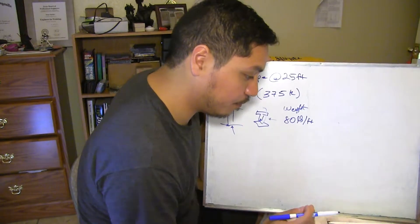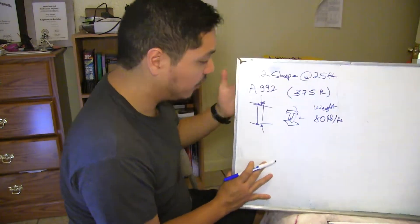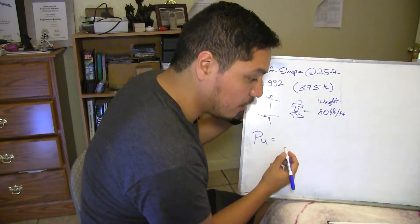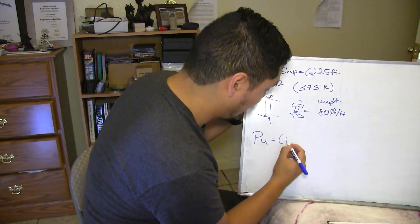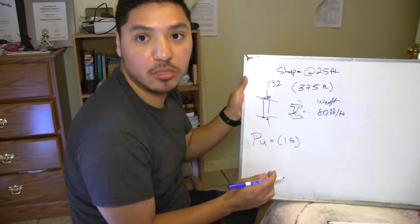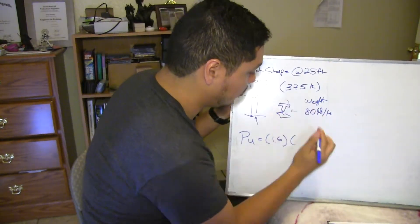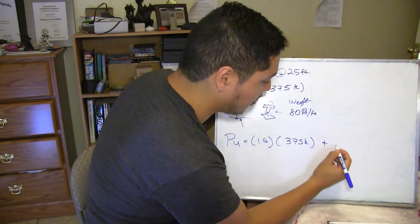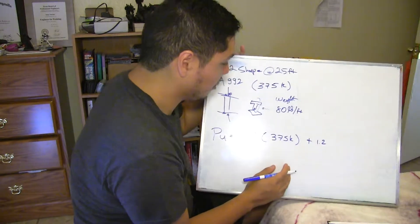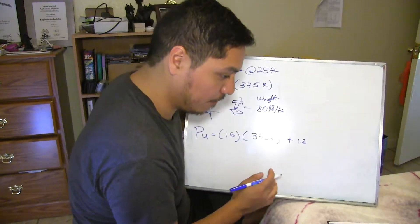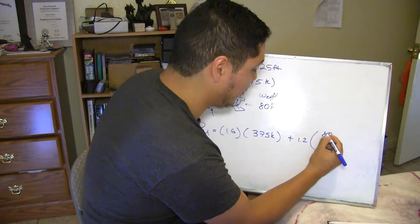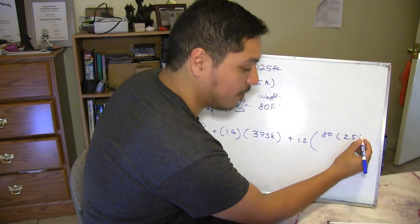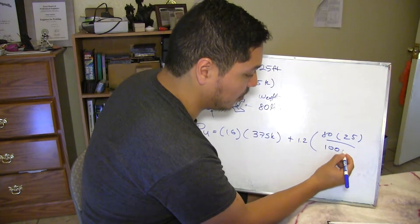So first we're going to get the required actual strength. Your PU is going to be 1.6 times your live load, 375 kips, plus 1.2. This is going to be from your dead load. You're going to be getting your dead load, so it's like your 80 PLF times the span length 25.